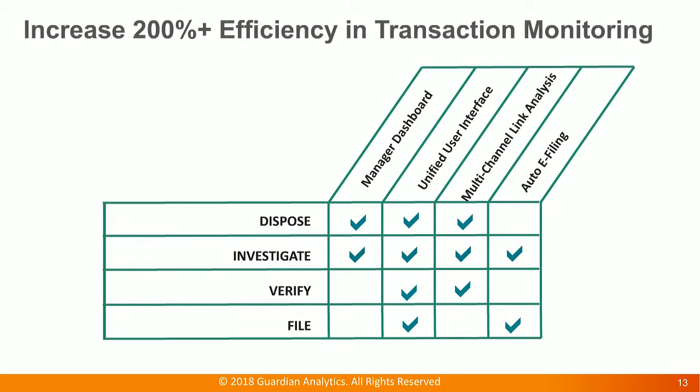With Evidence Lake, all those systems will be included inside Evidence Lake, so it would simply be Evidence Lake and Google for any third-party searches. All the information you need will be there, and the manager dashboard provides plenty of data and statistics to help triage and investigate alerts. The multi-channel link analysis will connect all the relationships so you can spot the entire relationship and any anomalies in seconds.